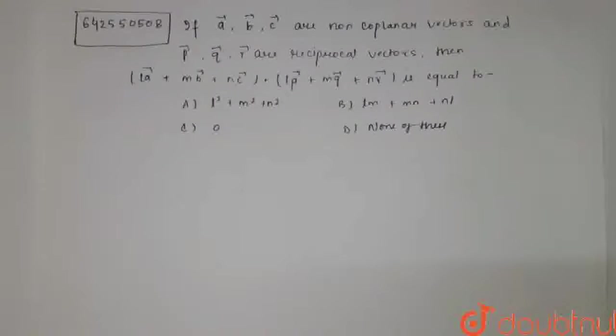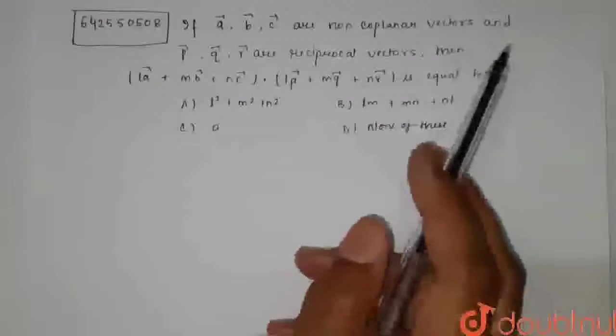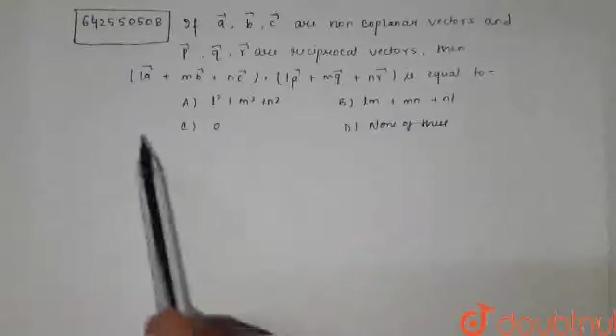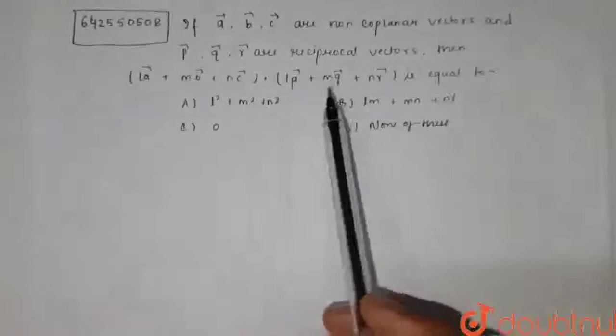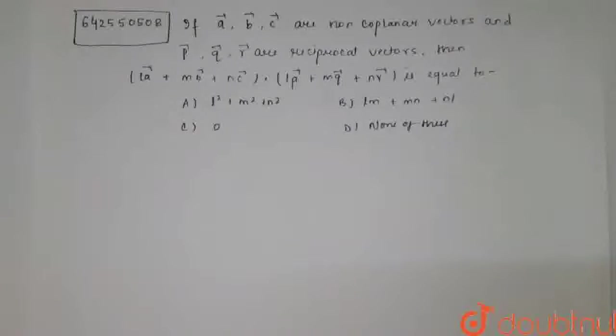Hello friends, a question is: if A vector, B vector, C vector are non-coplanar vectors and P, Q, R are reciprocal vectors, then LA plus MB plus NC in multiplication with LP plus MQ plus NR is equals to.